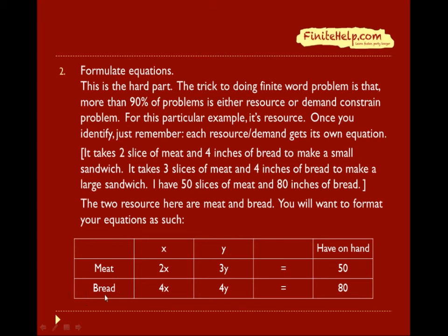Now, we are going to put the meat and the bread on the side here. And, we are going to put x and y on top here like this. From there, it is actually pretty simple. We just say, okay, well, x is a small sandwich. It takes two slices of meat and four inches of bread to make a small sandwich, x. For meat, it is 2x. And for bread, it is 4x. In the same way, y is the large sandwich. Three slices of meat is 3y. And four inches of bread is 4y.